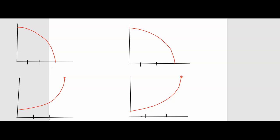Hello, everyone. Mr. Fawcett here, and we are back with another AP Calculus lesson. This lesson is actually an extension of our Riemann sums lesson. I just wanted to quickly talk about the differences between left and right Riemann sums — when the left Riemann sum is an over-approximation, when it's an under-approximation, when a right Riemann sum is an over-approximation, or when it's an under-approximation — and how we can figure that out based on what the graph looks like.